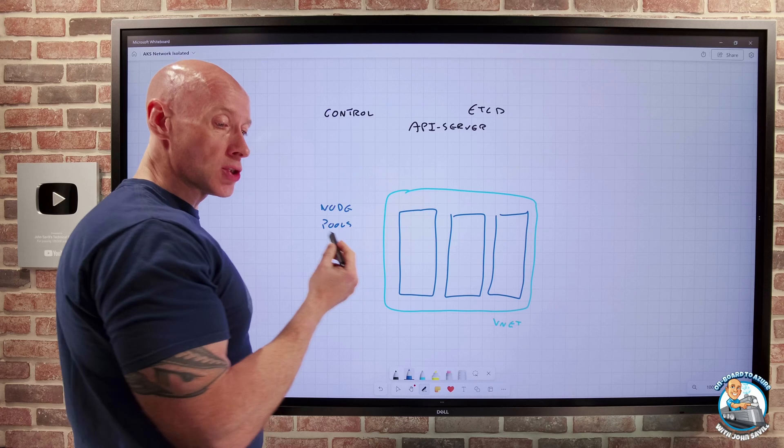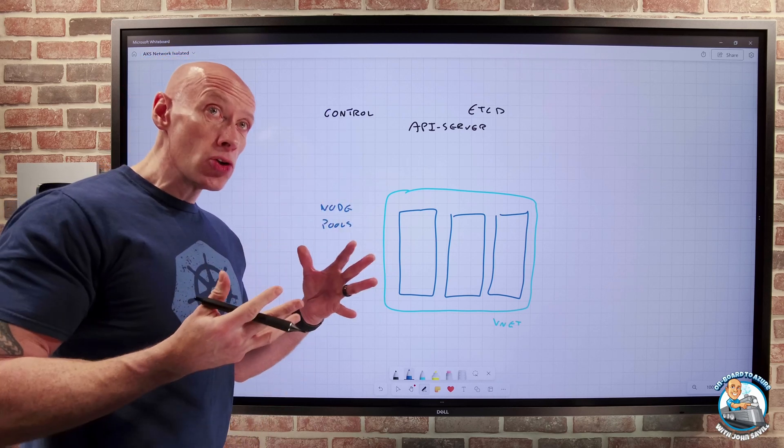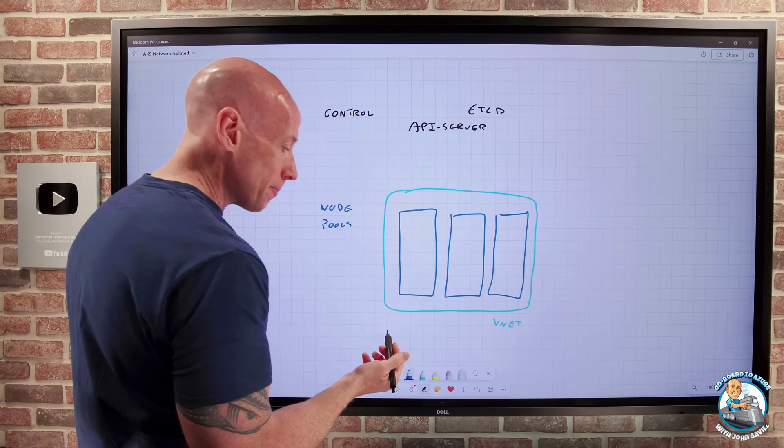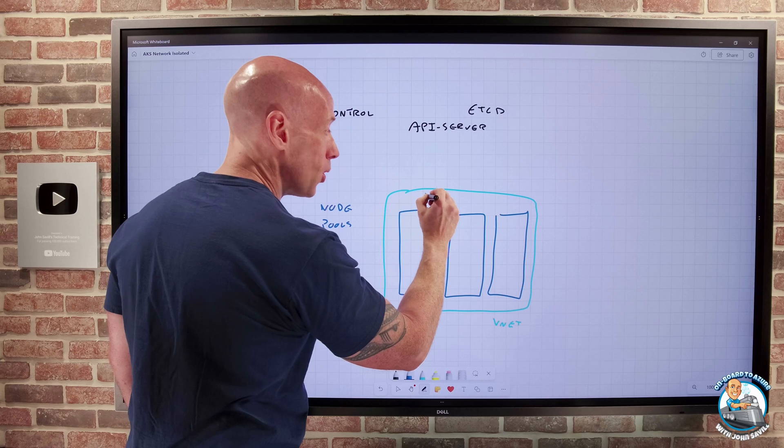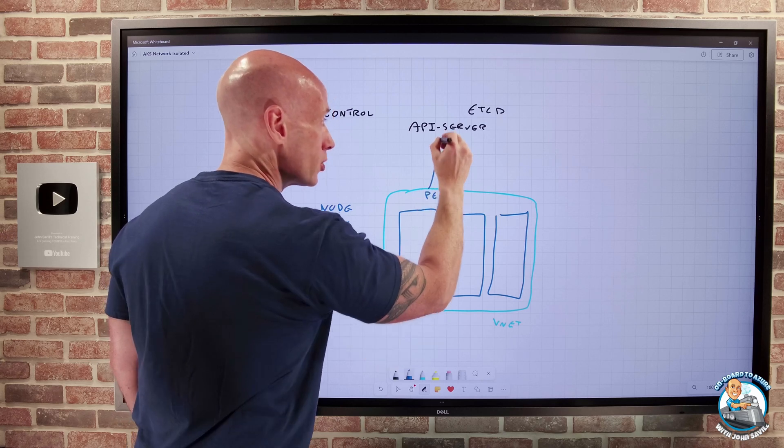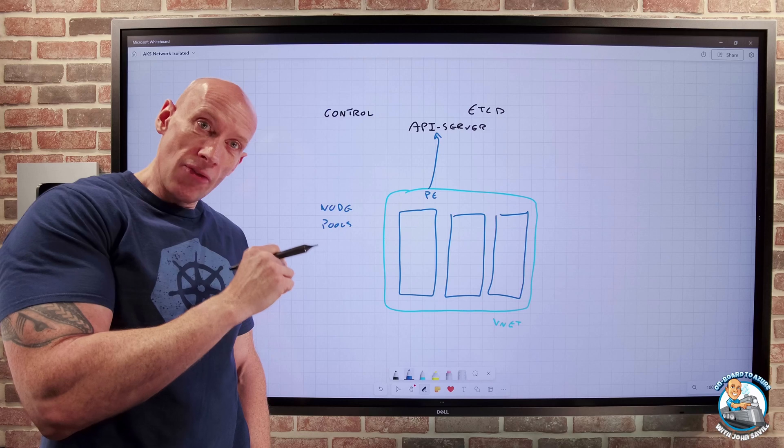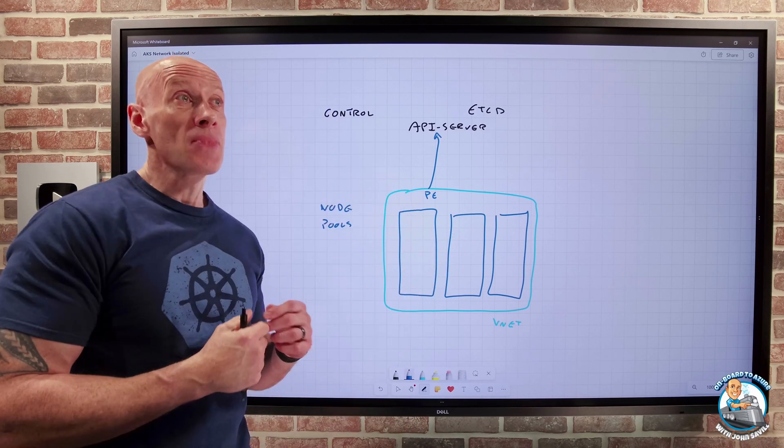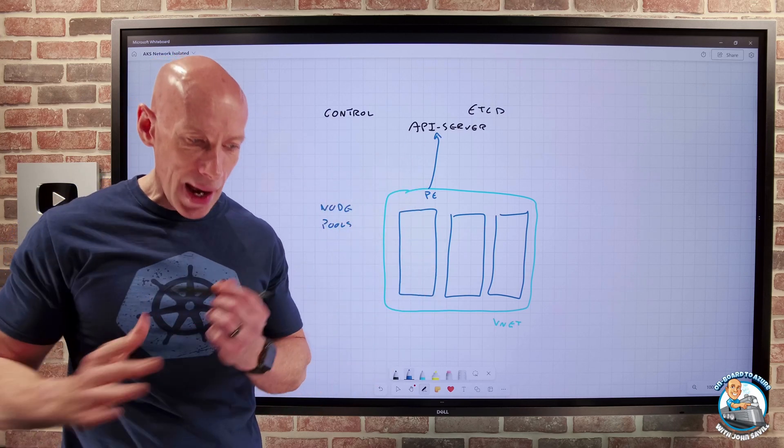Remember the kubelet has to go and talk to that API server. And we already have solutions for private connectivity to the API server. One of them, for example, is you can have a private endpoint to go and talk to the API server. Another one is you can do API server VNet integration. I get a small delegated subnet within my virtual network. There's an internal Azure load balancer that then fronts it, and I can talk to it that way.